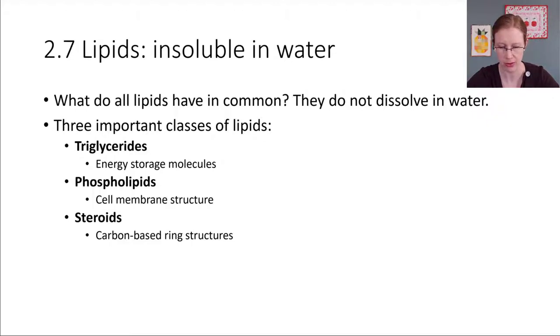Steroids do a lot of different things in our bodies. So the thing that might be coming to mind is like building up muscle. That's just one thing that steroids do in the body. There are a lot of other roles for steroids too. And steroids have a really characteristic ring structure. So we're going to walk through all three of these classes one at a time.